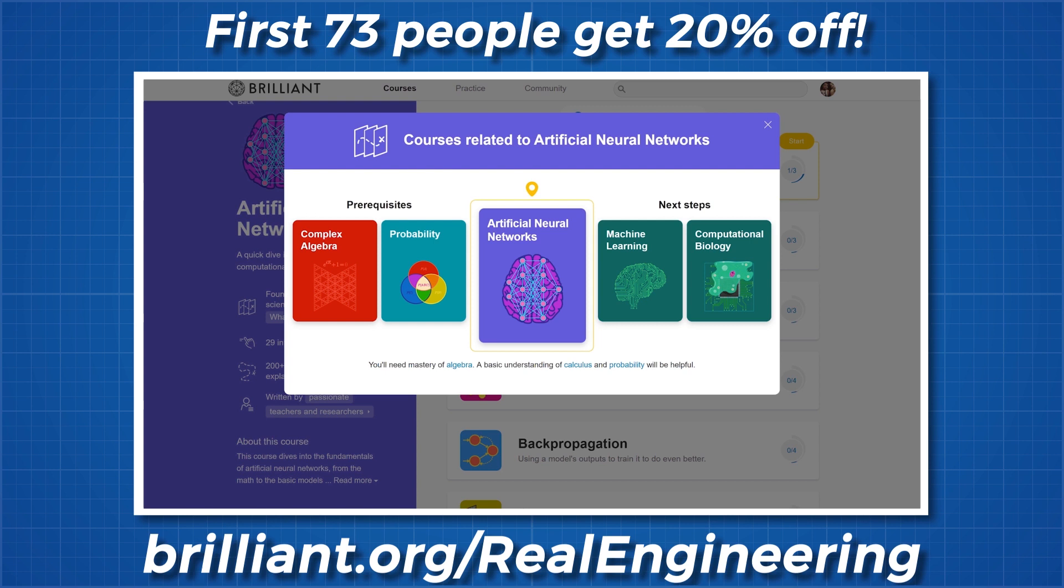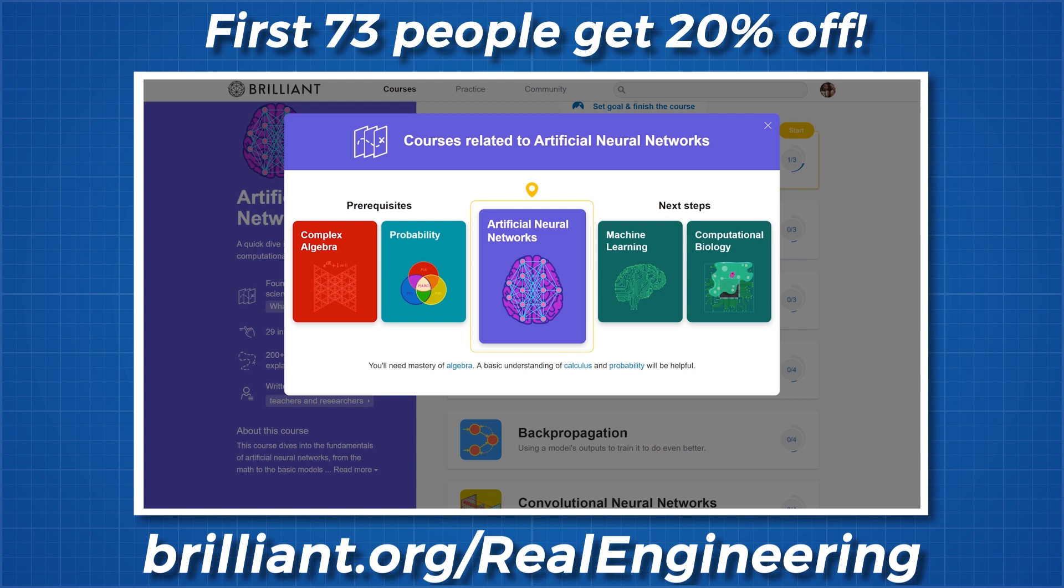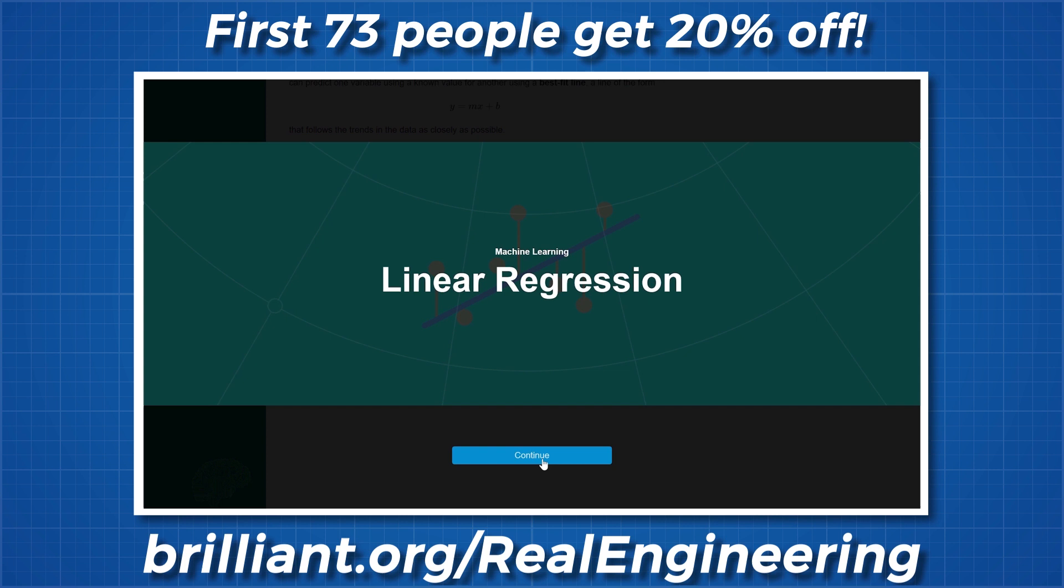Feeling inspired? Then go to brilliant.org/realengineering and sign up for free. And the first 73 people to go to that link will get 20% off the annual premium subscription.